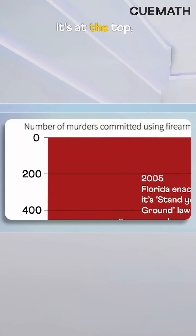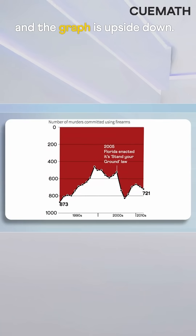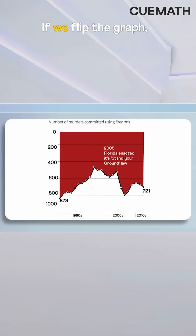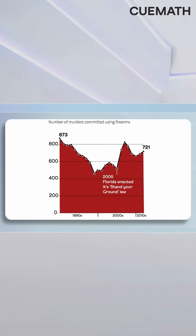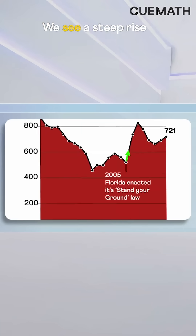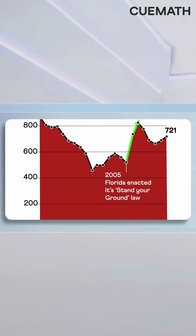It's at the top and the graph is upside down. If we flip the graph, it settles any doubt — we see a steep rise in murders after 2005.